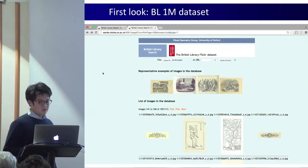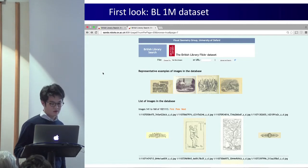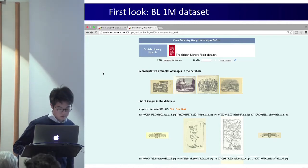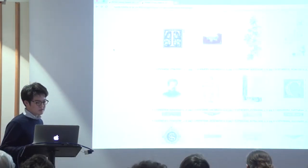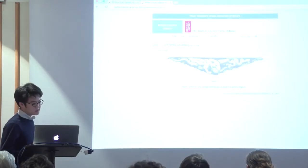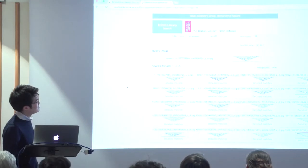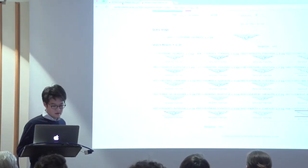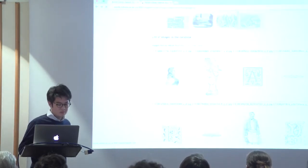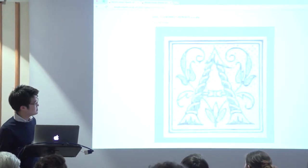Just earlier this week we had a first look at the British Library 1 million image dataset. We implemented the same retrieval system on this dataset, and as you can see the same method works as you would expect — and this is all done real-time. It will find similar looking images where there are any, as with this example.